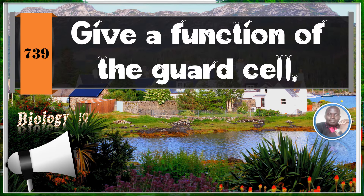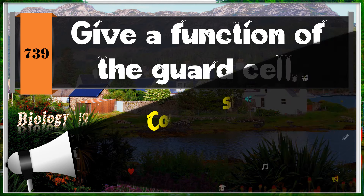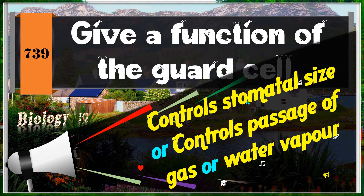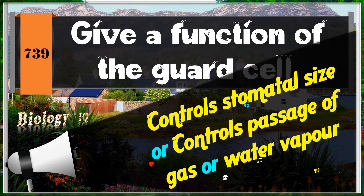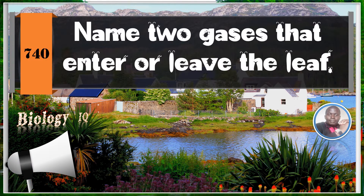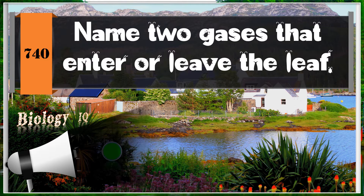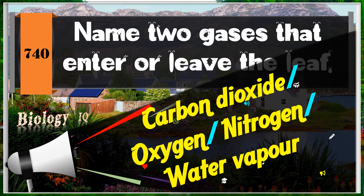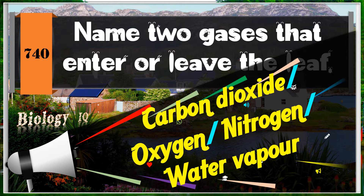Question 7: Give a function of the guard cell. It controls stomata size, or controls the passage of gases, or controls the passage of water vapor. Question 8: Name two gases that enter or leave a leaf.